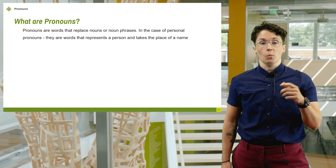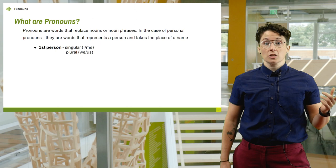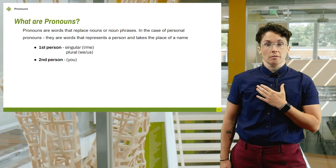Pronouns change based on our perspectives. First person singular are I and me. First person plural, we and us. Second person is you. Third person: she, her, they, them, ze, them, he, him.